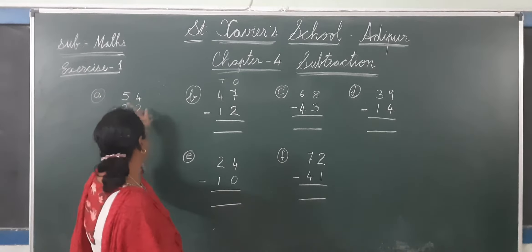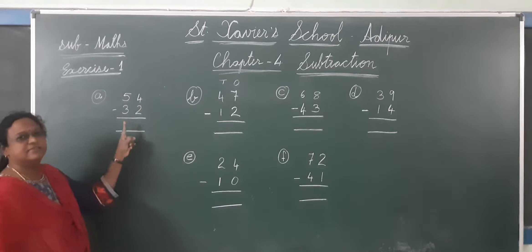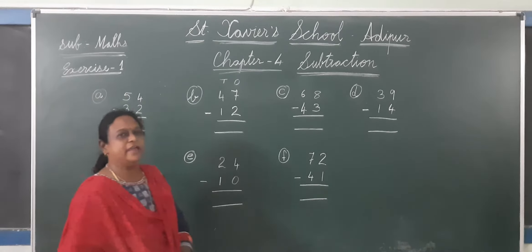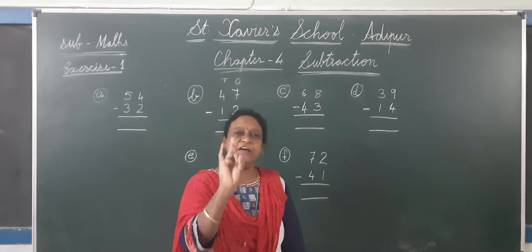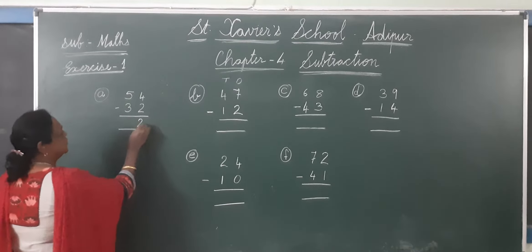Now, A came here. This is 54 minus 32. So now we will do 4 minus 2. So 4 fingers, then 1, 2, minus. So how many left? 2. So you have to write the answer 2.